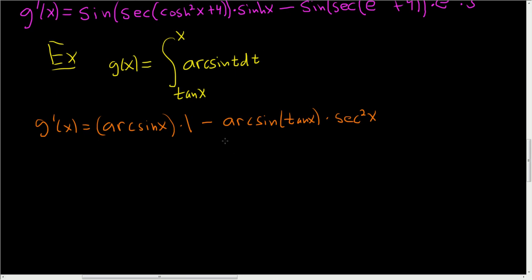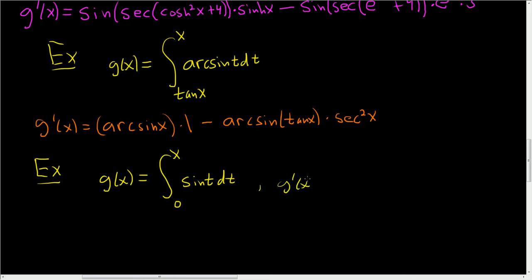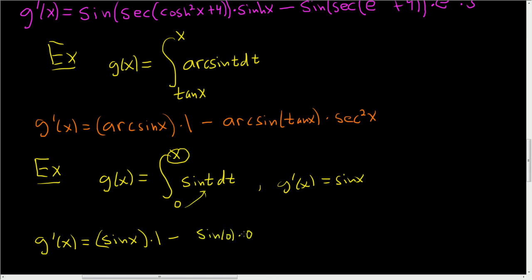I should have started with an easier example — like what you'd find in a Calculus 1 class. Let g of x equal the definite integral from 0 to x of sine t, dt. Using our formula: plug in x — sine of x — times the derivative of x, which is 1, minus plug in 0 — sine of 0 — times the derivative of 0, which is 0. That whole second term is 0, so you just get sine of x. Our way is longer for easy examples, but when you have a function on the lower limit, our approach becomes the better way.